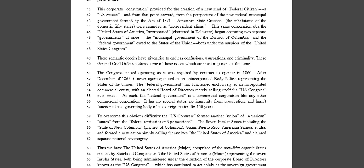So going back now — the corporate constitution provided for the creation of a new kind of federal citizen. This is section 41 in the letter: U.S. Citizen, capital-U, capital-S, Citizen. And from that point onward, from the perspective of the new federal municipal government formed by the Act of 1871, American state citizens — in parentheses, the inhabitants of the domestic 50 states — were regarded as non-resident aliens.